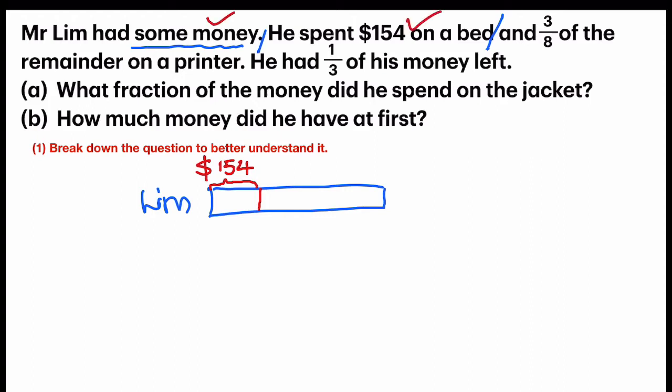He also spent 3/8 of the remainder. The key thing is of the remainder. So I'm going to look at this particular part, which is called the remainder. And I shall do something to it. 3/8 of the remainder. So I'm going to chop this remainder into 8 parts: 1, 2, 3, 4, 5, 6, 7, 8. And they say 3/8 of the remainder on a printer, which I do not know how much it cost.